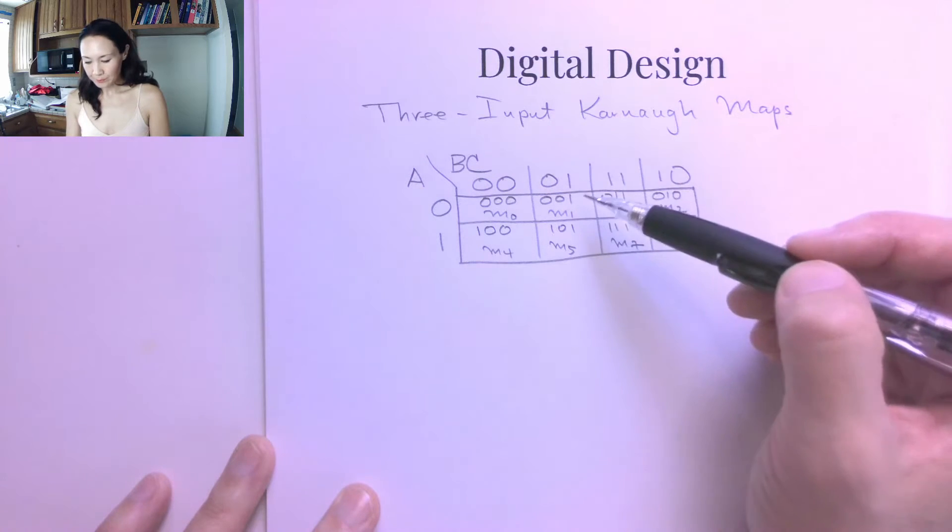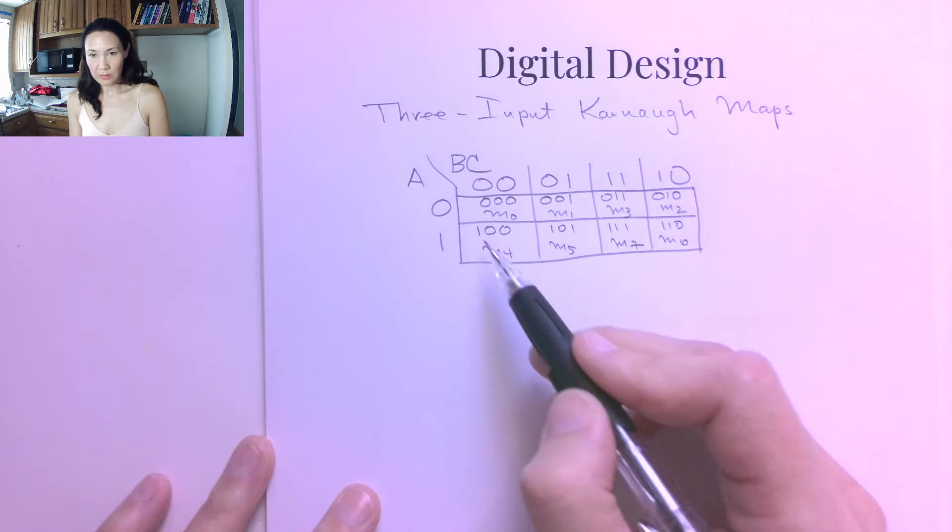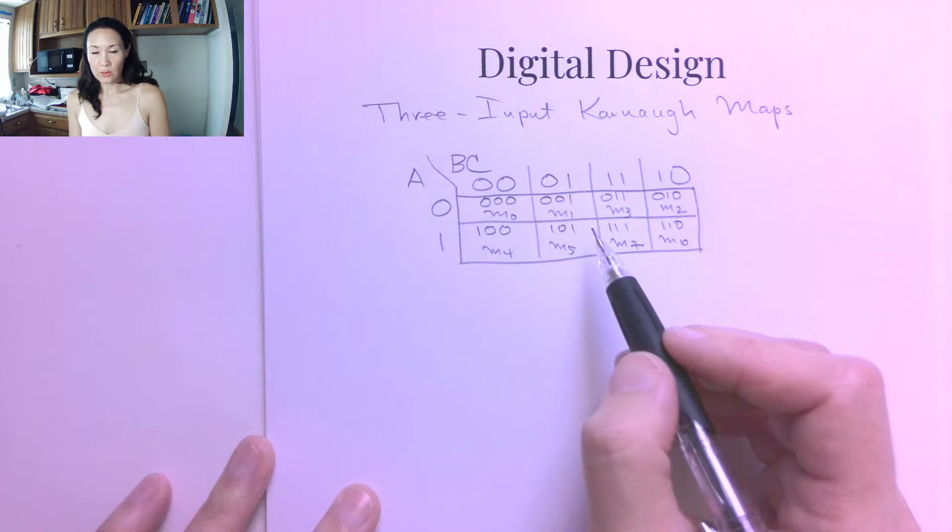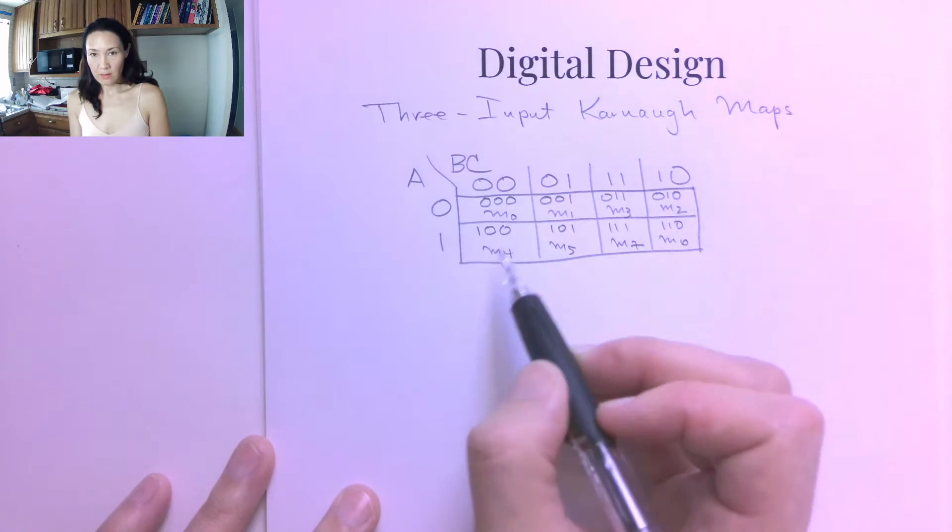So we can do entire rows. We can do groups of 2. We can do groups of 4. We can do wraparound grouping where we group this with this.